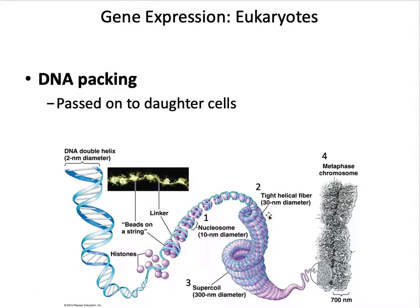How are all these genes turned off or on? How are they controlled? It has to do with accessibility. If the DNA is accessible, we can go through transcription and translation. That means RNA polymerase can access the DNA and undergo transcription, and ultimately the ribosome can translate that mRNA into a protein.